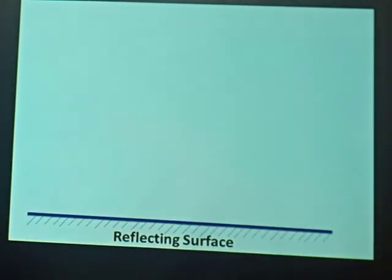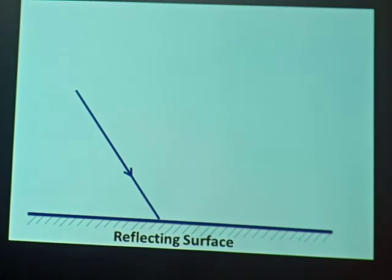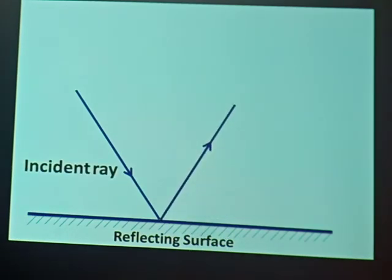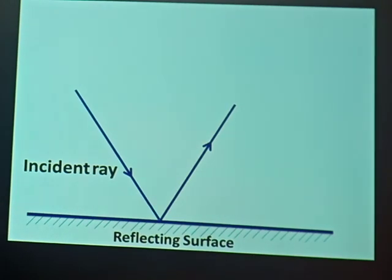To begin with, in our previous lesson we learned about reflection of light when it falls on a smooth, shiny surface. We talked about a reflecting surface, a ray of light that strikes the reflecting surface — which we called the incident ray — and another ray of light that bounces off the reflecting surface, which we called the reflected ray.